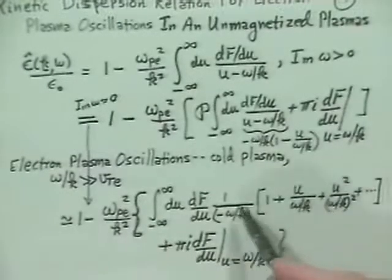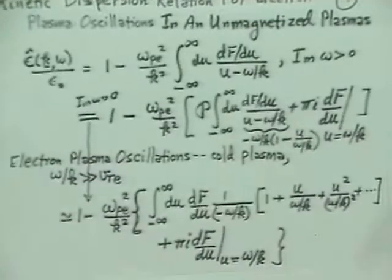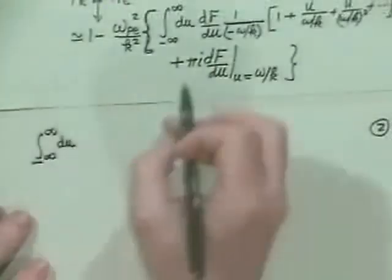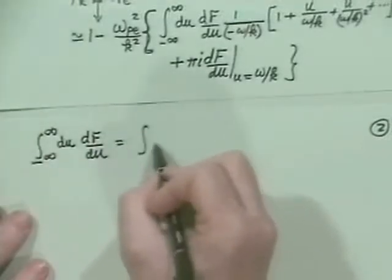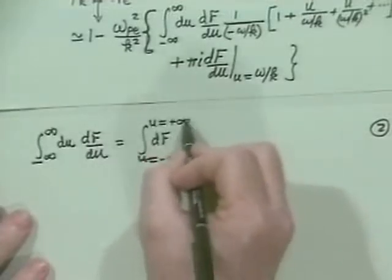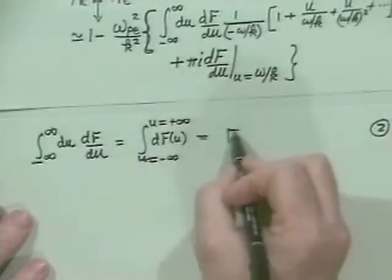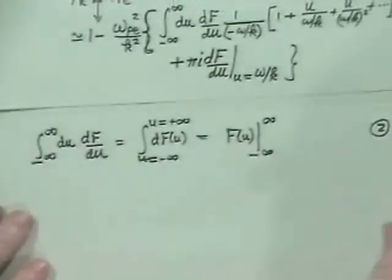Now I need to calculate the integral of the distribution function, which is done by integrating by parts. The first integral is from minus infinity to infinity of df/du du, which is just the total integral — f of u evaluated from minus infinity to infinity — and that goes to zero because it's exponentially small at the ends of a Maxwellian.